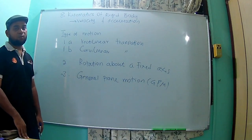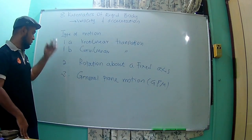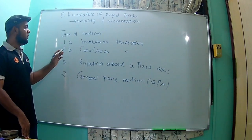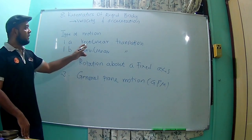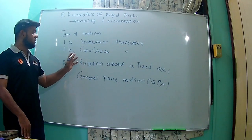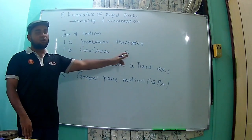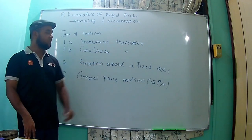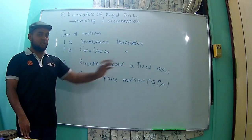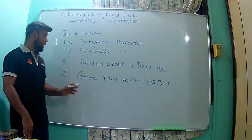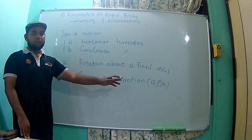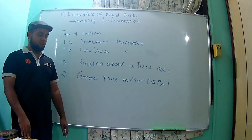We have three or four types of motion. The first one is rectilinear translation. The second one is curvilinear translation. Then we have rotation about a fixed axis. And the last one is general plane motion.